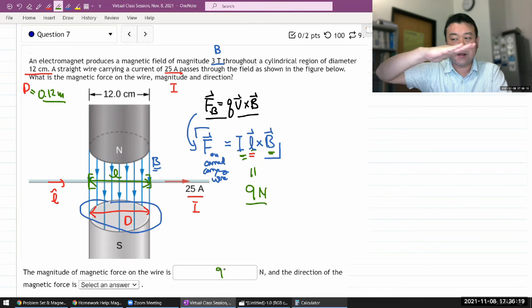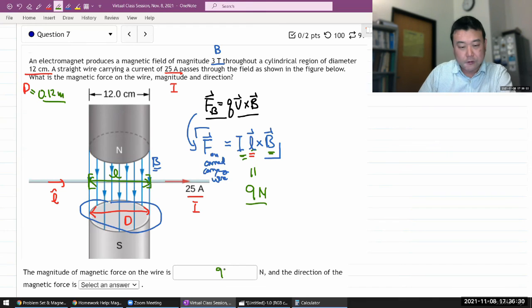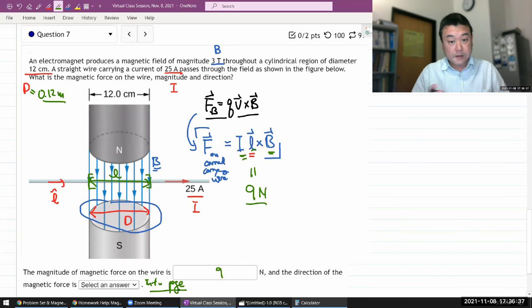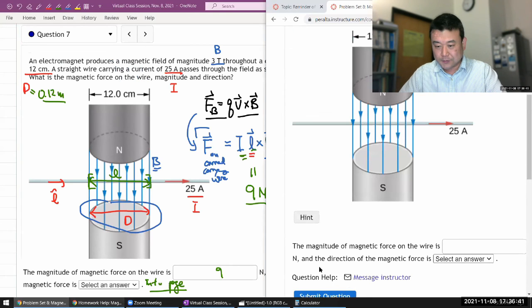So L cross B. My thumb is pointing into the screen from your perspective. And that's the correct perspective, or it'll give the correct answer. So magnetic force points into page or into the screen.